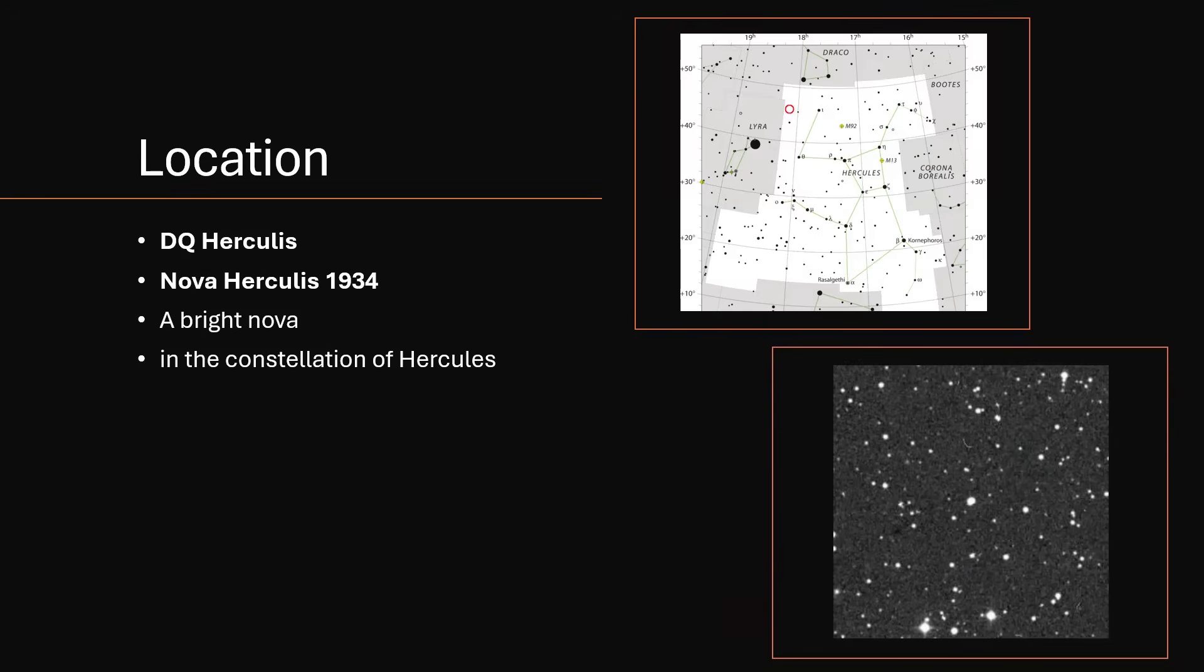You can see the position marked in the top left-hand corner of Hercules there with the little red ring, almost on the border over into the constellation of Lyra. And we have an image of it, not very spectacular, just a bright ring-like star with no diffraction spikes, so something slightly unusual about it for that brightness.